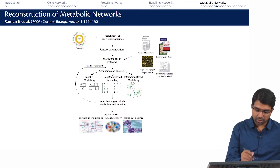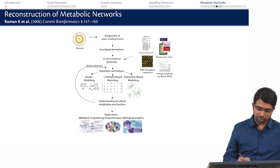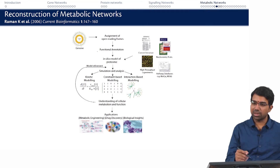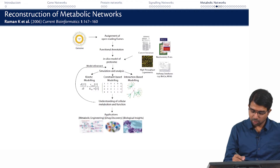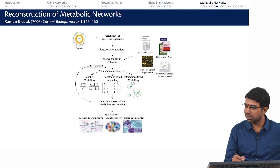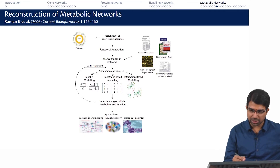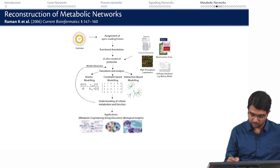So you start with the genome — this is one of the most painstaking processes you will have. It involves a lot of time and effort. You start with the genome, hopefully the open reading frames have already been assigned, and some functional annotation must have been done. Then you have the entire proteome of the cell, and then you integrate information from literature, biochemistry textbooks, pathway databases, and any high-throughput experiments, and finally build a model.